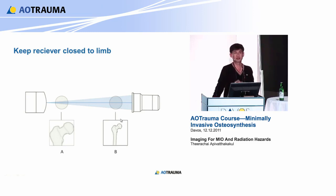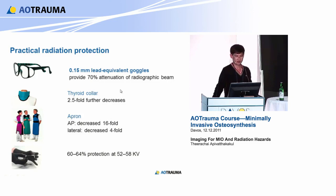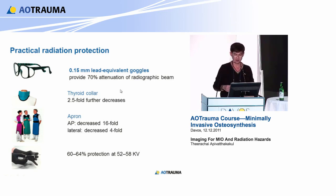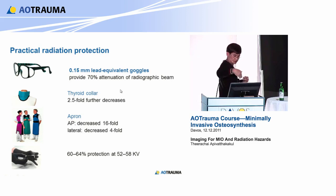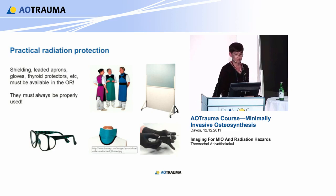Your hands have very high risk - you have to know how to keep your hands out of the X-ray beam. The eyes - this is the cataract risk. The thyroid - maybe thyroid cancer. Use all protective equipment if you have it. Don't just leave it somewhere. The cochlear shield, thyroid shield - every time now I use a thyroid shield, always. The apron: if you wear the apron facing directly to the beam, it reduces dose 16-fold. But if you stand laterally, the X-rays can come through the side. So when you face, put the AP side facing the C-arm - that is safer.